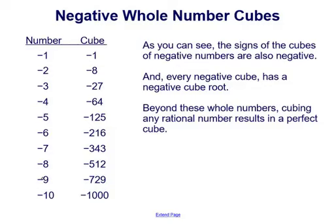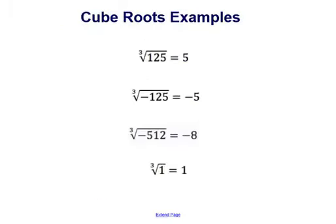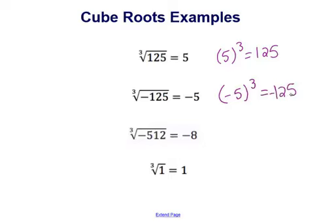Beyond these whole numbers, cubing any rational number results in a perfect cube as well. Here are more examples: the cube root of 125 equals 5, because by definition 5 cubed is equal to 125. The cube root of negative 125 is negative 5, because negative 5 cubed equals negative 125 — a difference in signs.